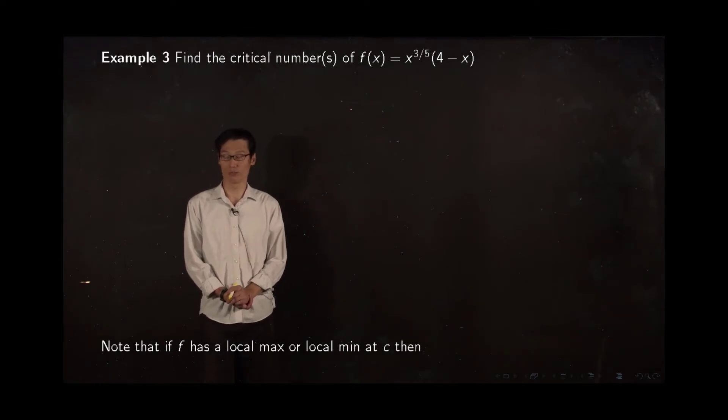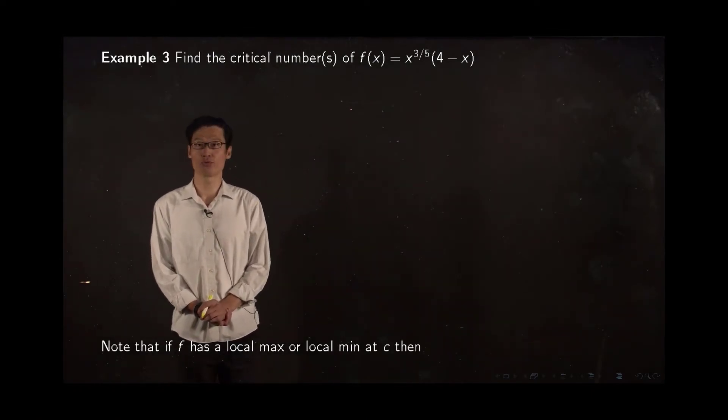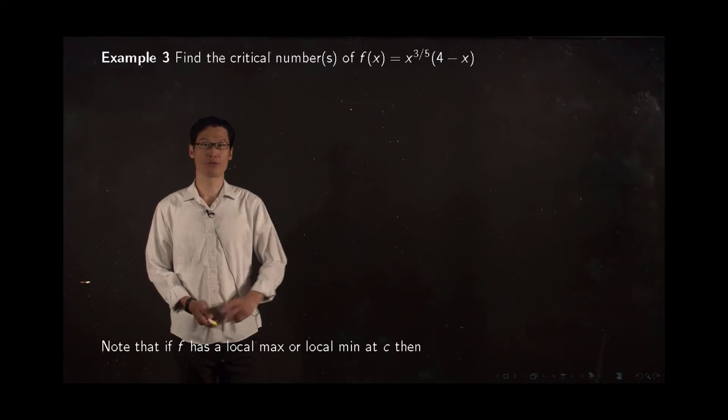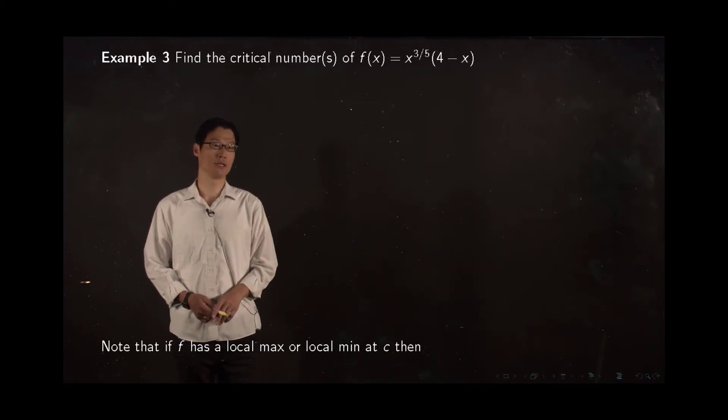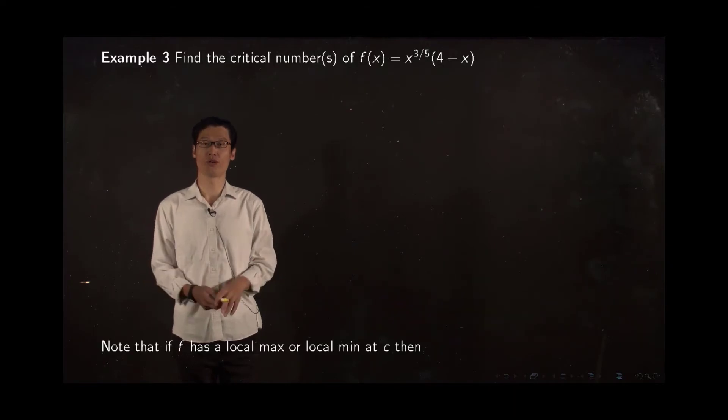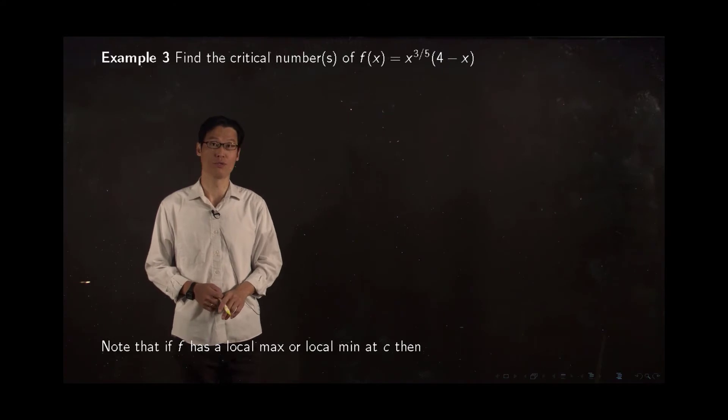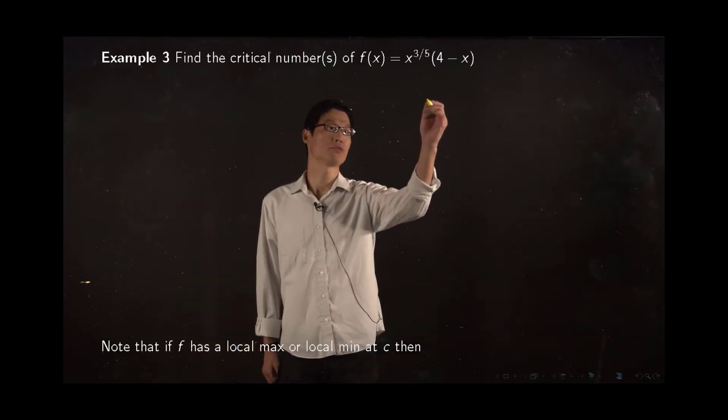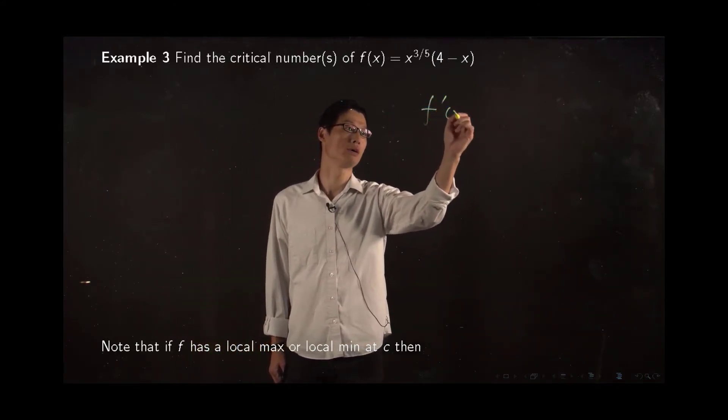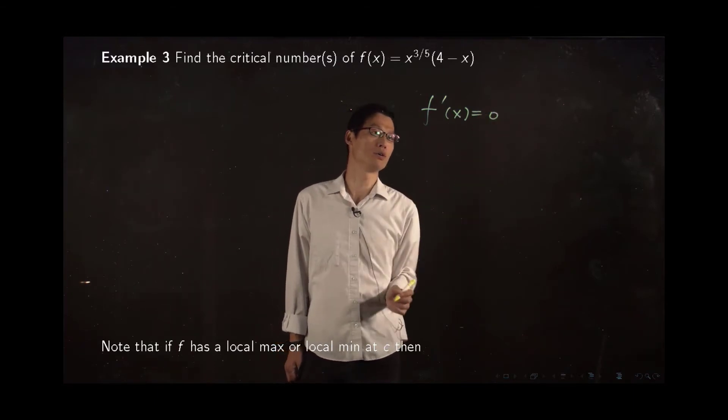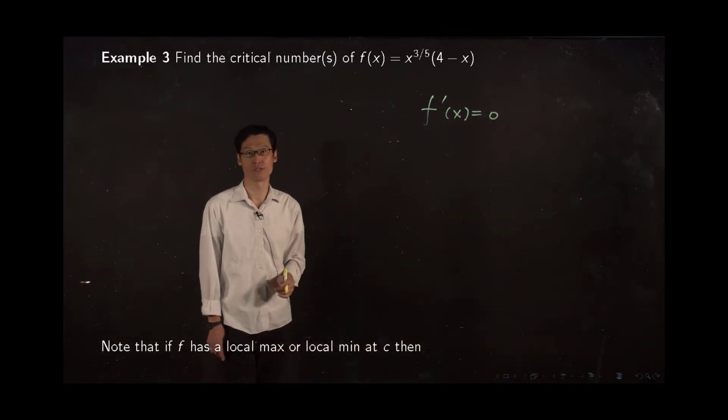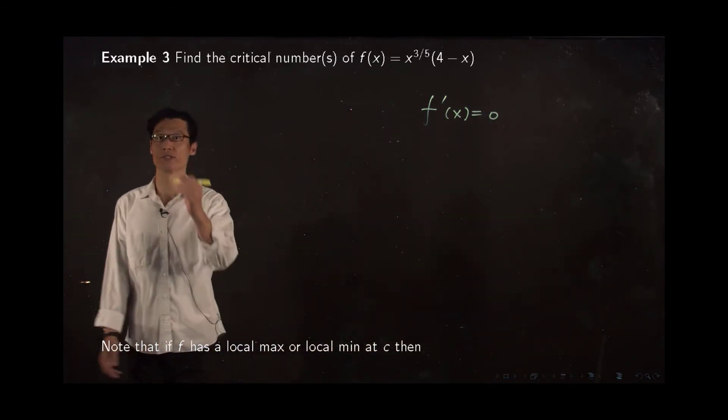All right, one more example. We want to find critical numbers for this given function. Well, to find a critical number, you want to check where your function has horizontal tangent line or your function is not differentiable. So basically, first you want to check where you have zero derivative. So you want to take derivative first.